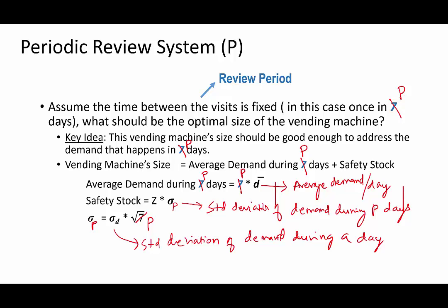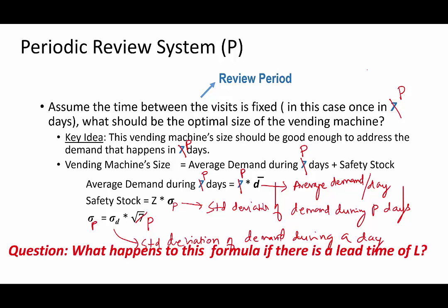Another question: what happens to this formula if there is a lead time of L? In the case of the vending machine, there is no lead time because the person reviews the level of sodas and refills the machine right there — lead time is zero. But in a business environment where a buyer places an order to refill the system to a target level, a supplier may have a lead time. When there is a lead time L, you simply replace P with P plus L.